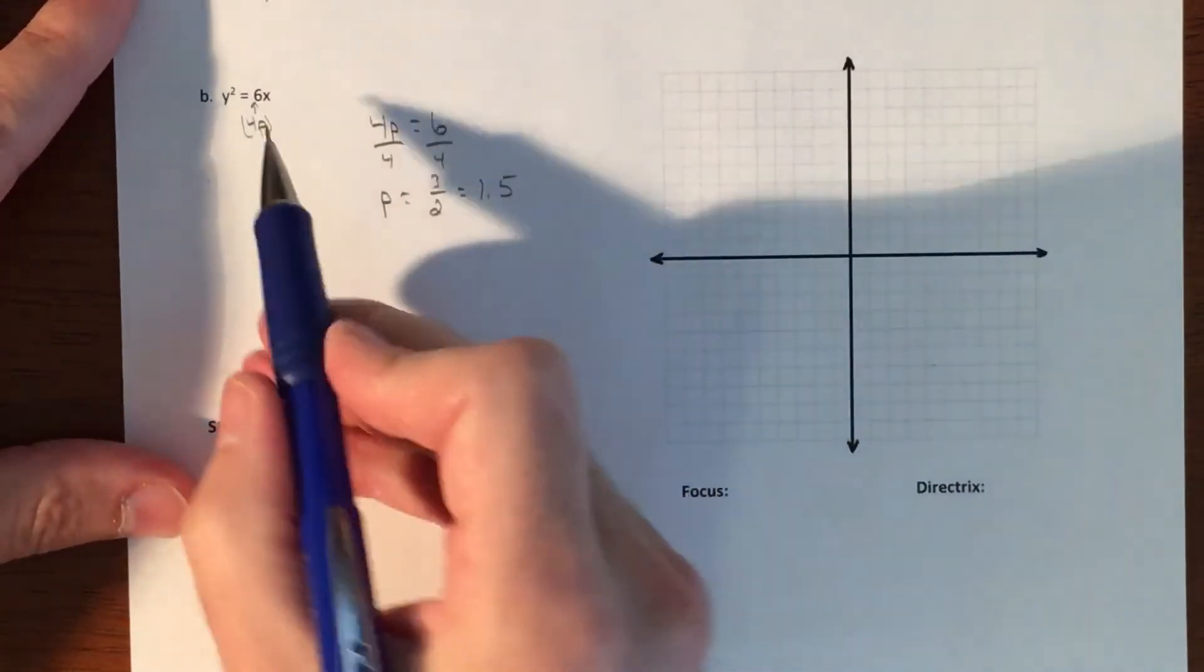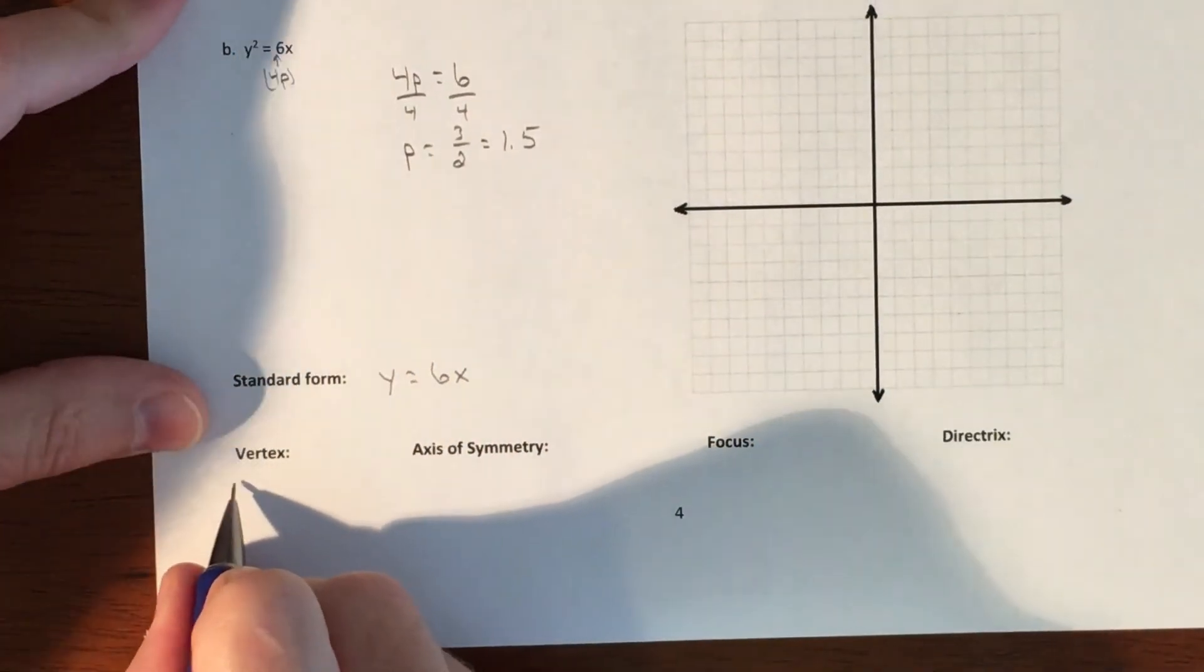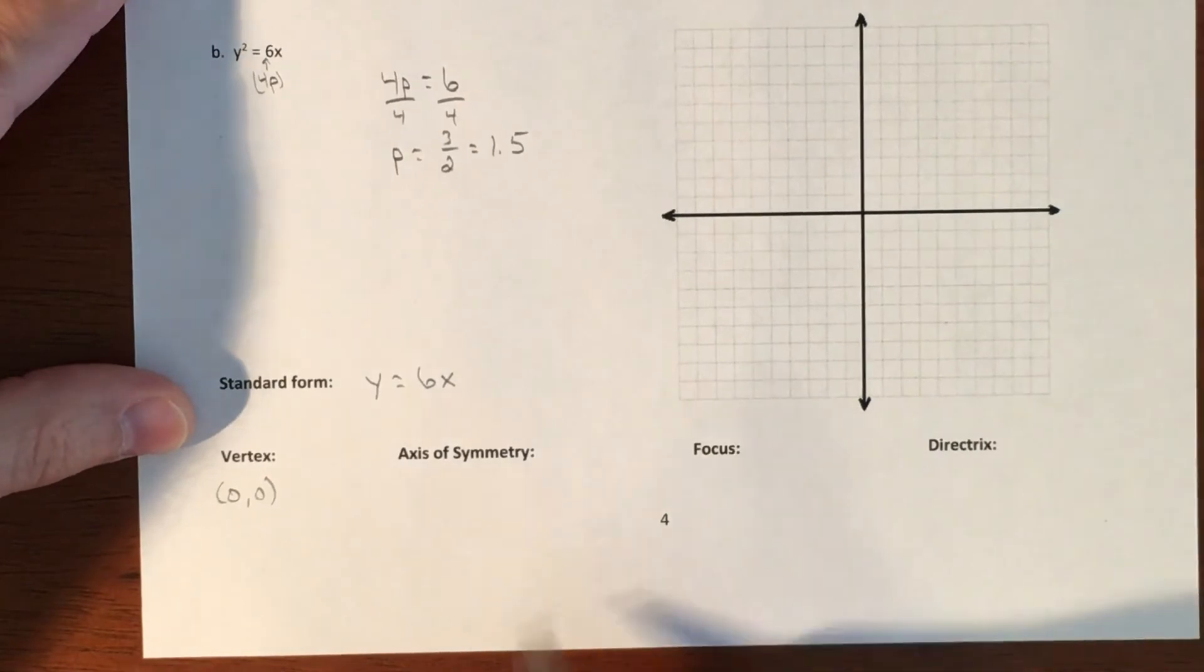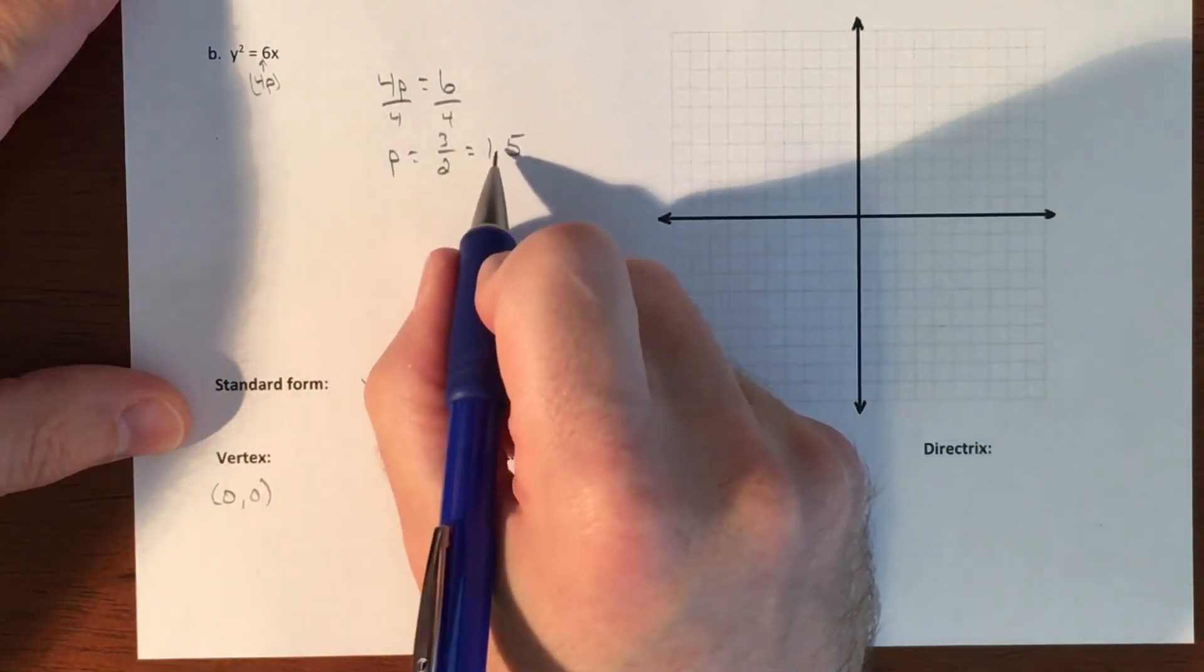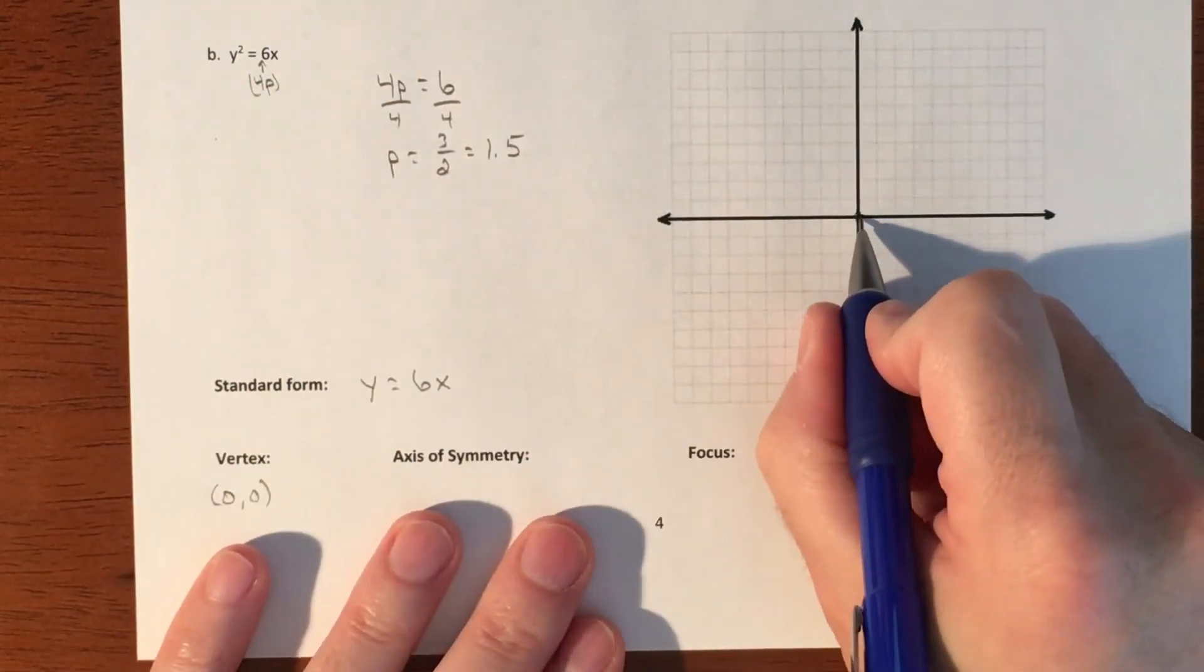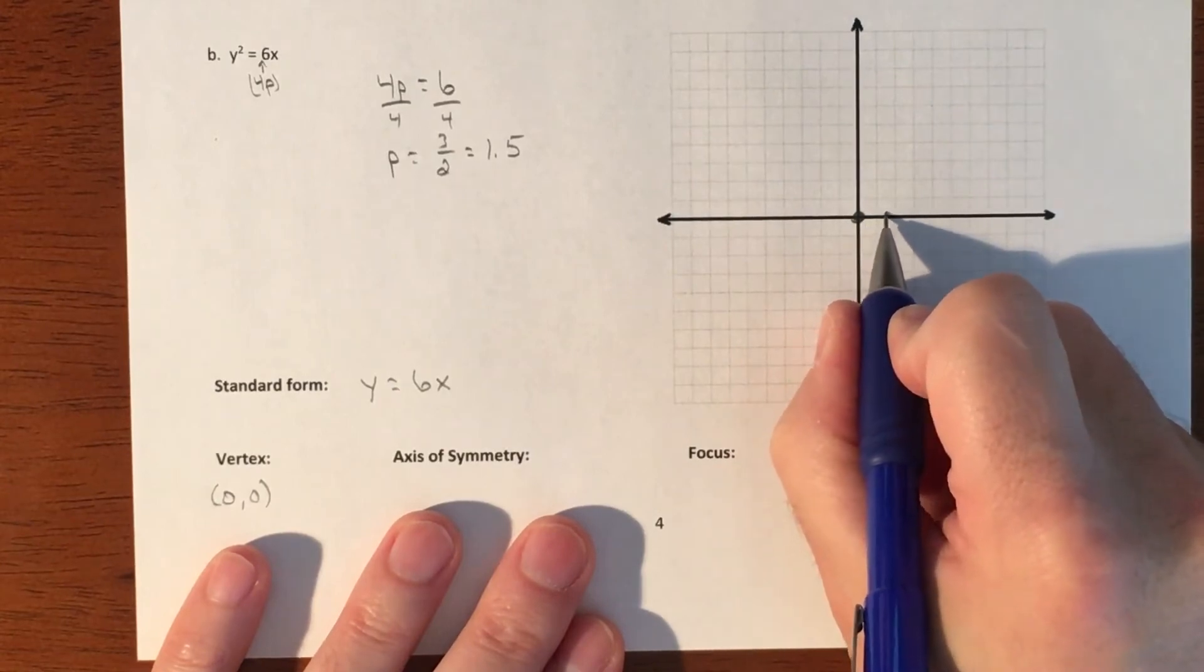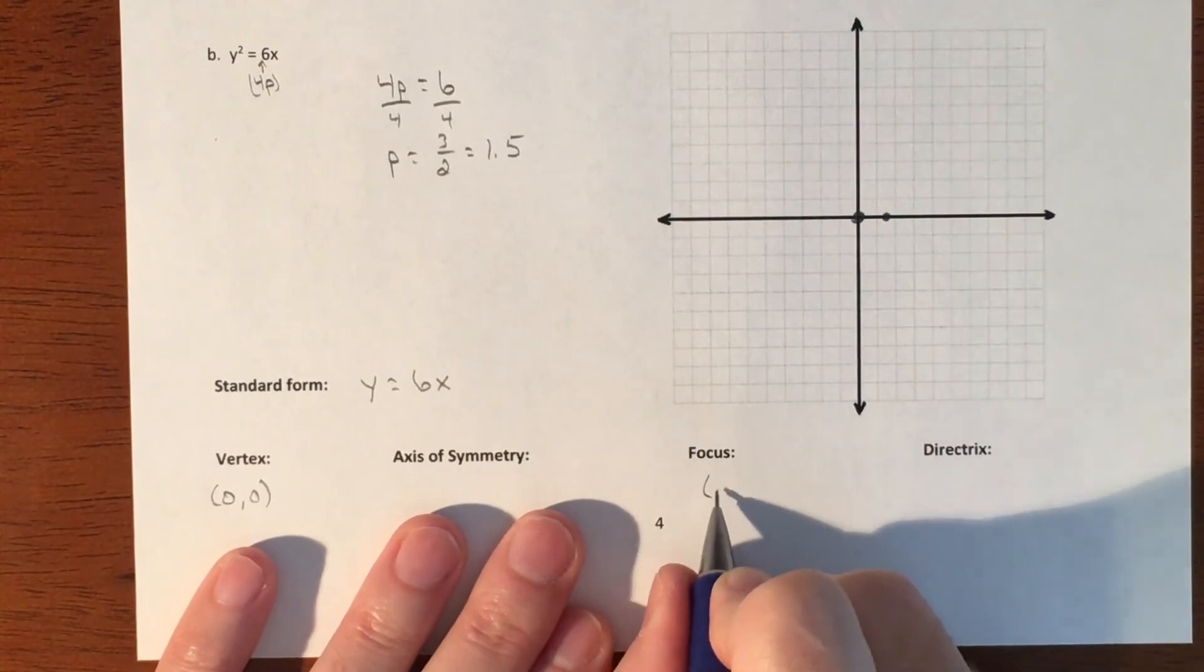So because again, we don't have any adding or subtracting pieces. Our vertex is at (0, 0). Our focal point, we're about to figure out. So our p value is positive. And this is a left and right graph. So our focal point or our vertex is here. So we're going to go out one and a half. All right. So your focus is (1.5, 0).